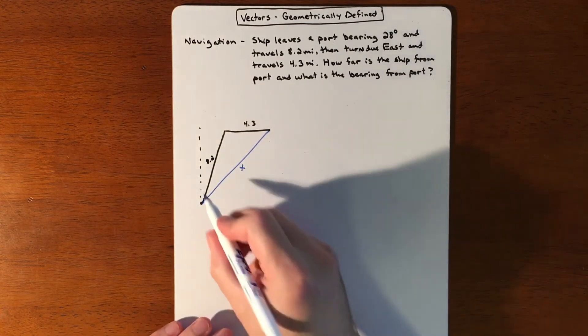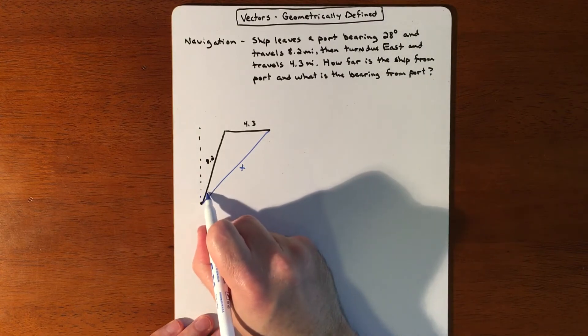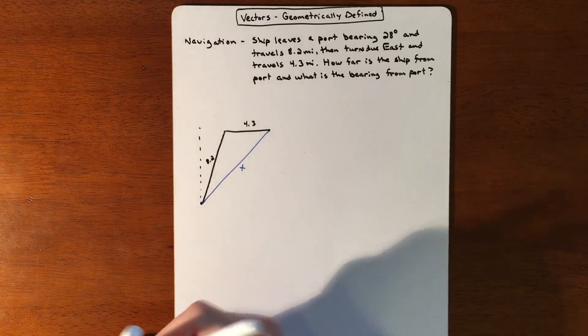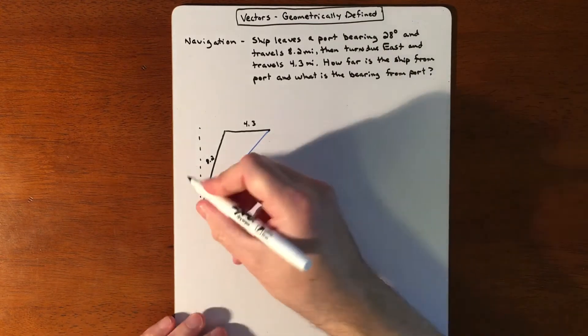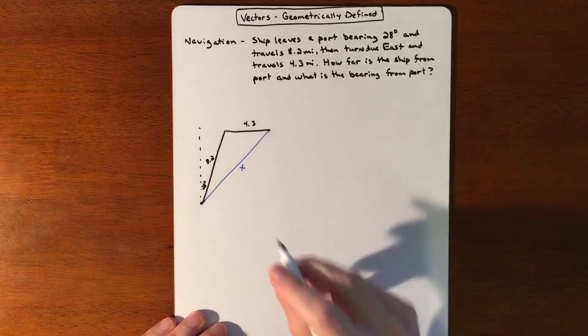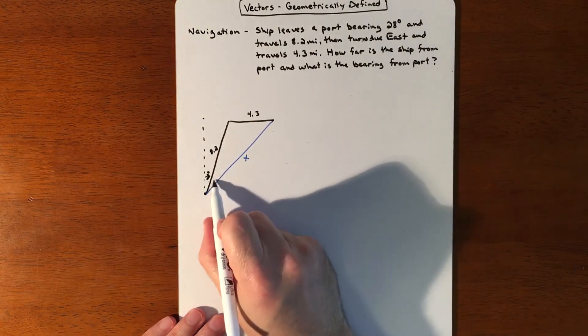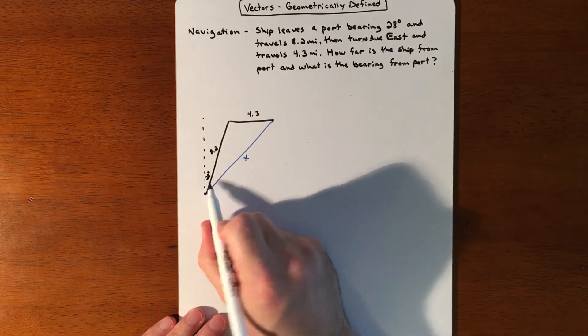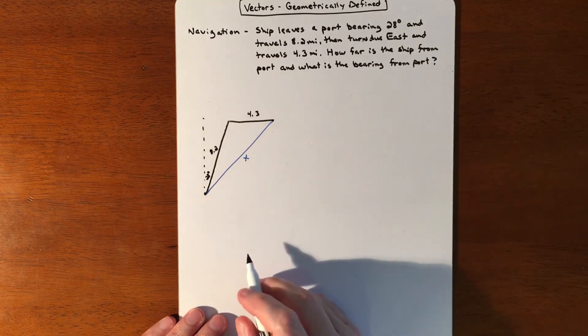And what is the bearing from the port? The bearing from the port is going to be this whole thing actually. Right now we know that the bearing originally was 28 degrees and we've got to figure out what that angle is so we can add the two together to figure out what our bearing from the port is.